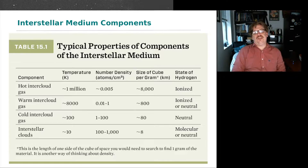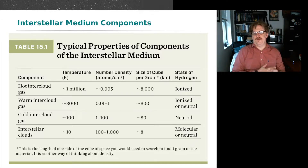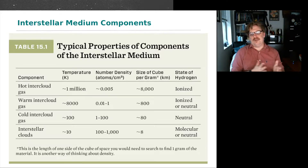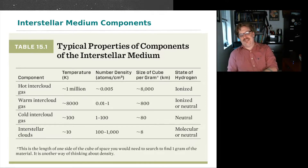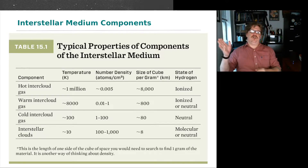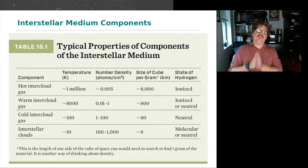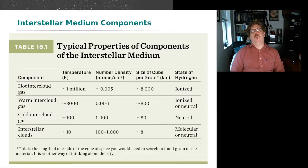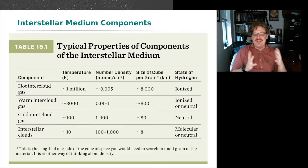When we look at the interstellar medium, we can subdivide it into four different components based on their temperature. Temperature affects density, which in turn affects the state of hydrogen — what the atoms look like and what state you will find the atoms within that cloud.